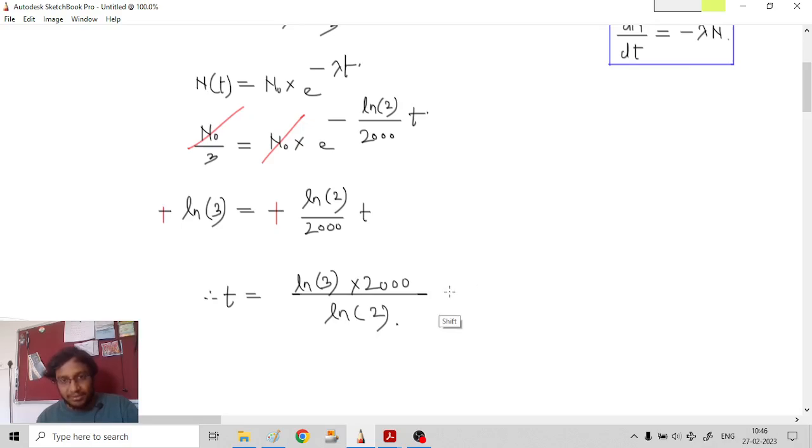Okay, so let us calculate this now. The approximate value of ln 2 is 0.693. You should also remember the value of ln 3. If the on-screen calculator is not available, but I think it is available in all the exams like this one. So ln 3 into 2000 upon 0.693.